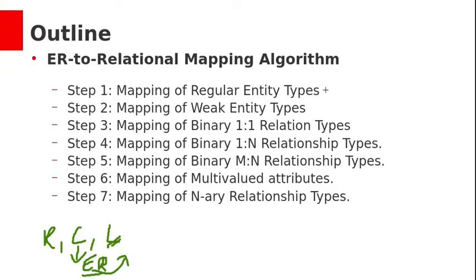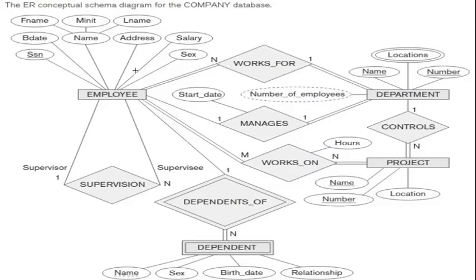The seven steps are: mapping of regular entity types, second mapping of weak entity types, third mapping of one-to-one relationship types, fourth mapping of one-to-N relationship types, fifth many-to-many relationship types, sixth mapping of multi-valued attributes, and last mapping of N-ary relationship types. In the previous class we learned how to design ER diagrams. Let's see how to convert these ER diagrams into relational database tables.